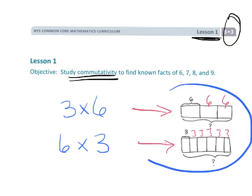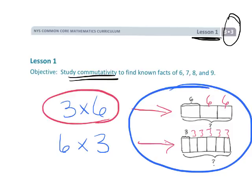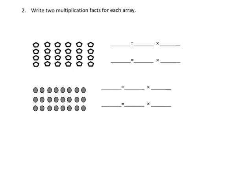In both cases the answer is 18. So the idea is we're going to use this concept to help students understand that if a student knows three times six, then she also knows six times three. In the previous slide I was showing tape diagrams; here we're going to do the same thing with arrays. Traditionally we have four rows and each row has six, so traditionally we would label this as four rows of six.